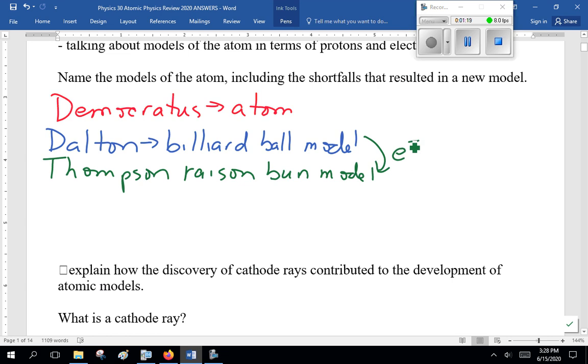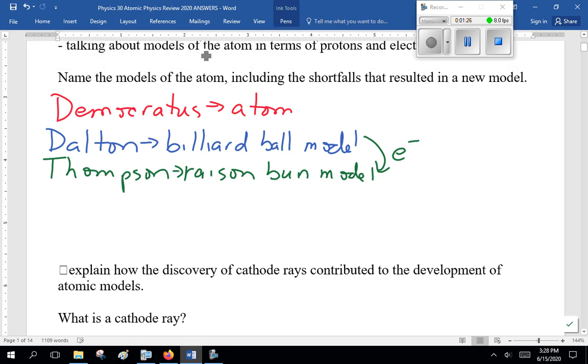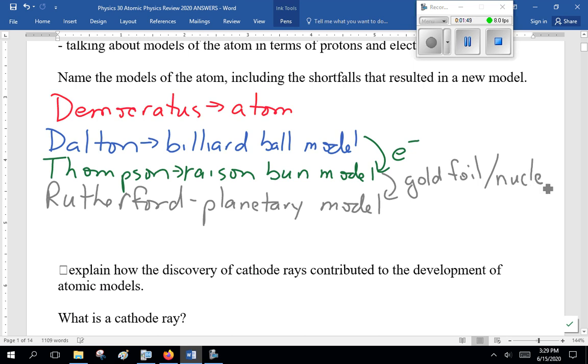But then Thompson discovered the electron with the cathode ray tube. Thompson's Raisin-Bun model was good, but then, of course, Rutherford. Planetary model. He did the gold foil experiment, showed there are nuclei.